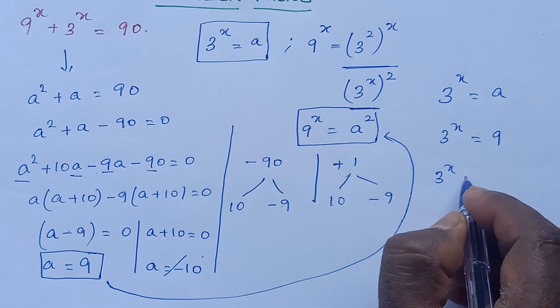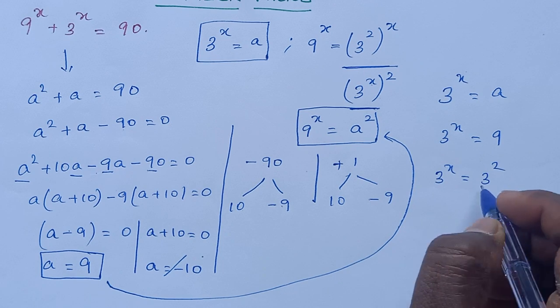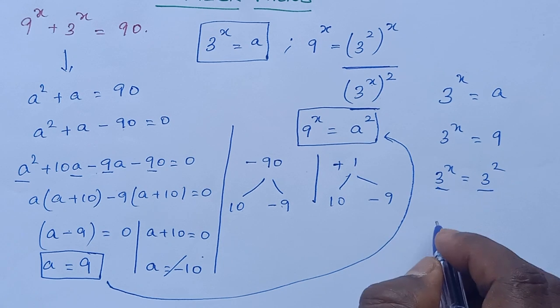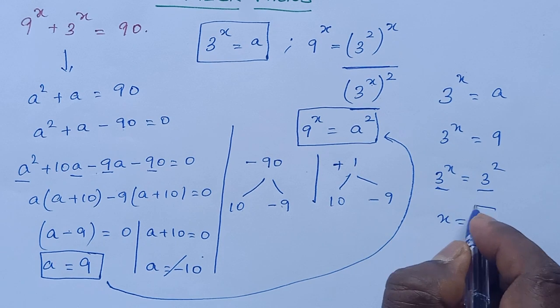Now 3^x equals 3 squared. The bases are the same, so x equals 2.